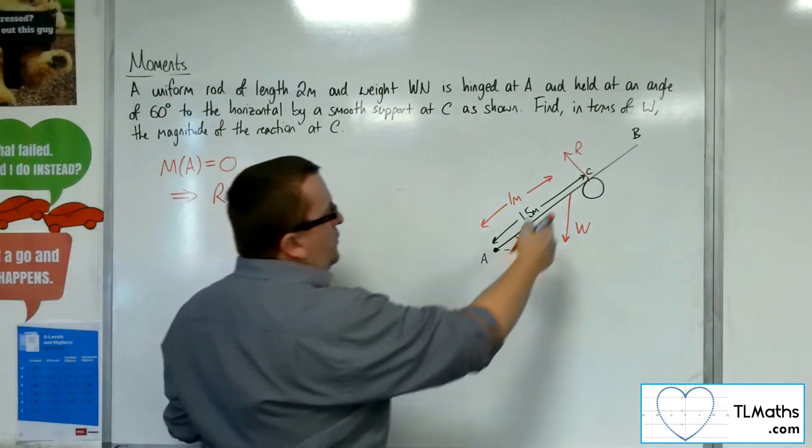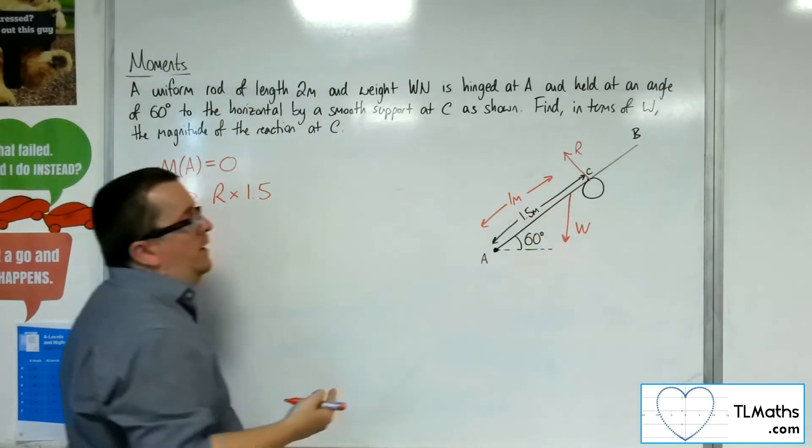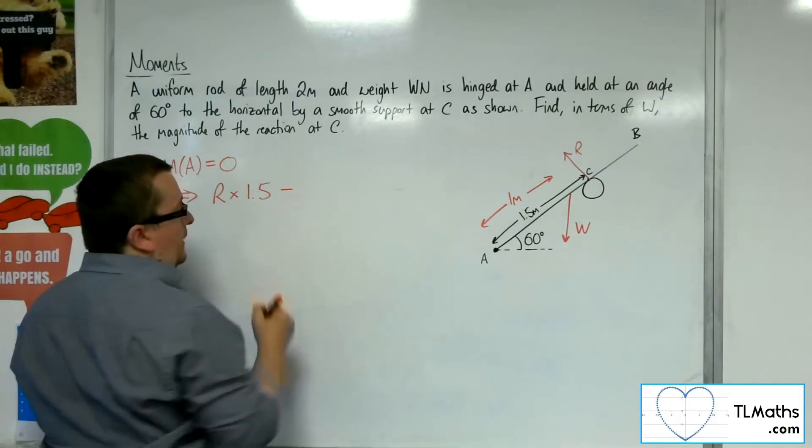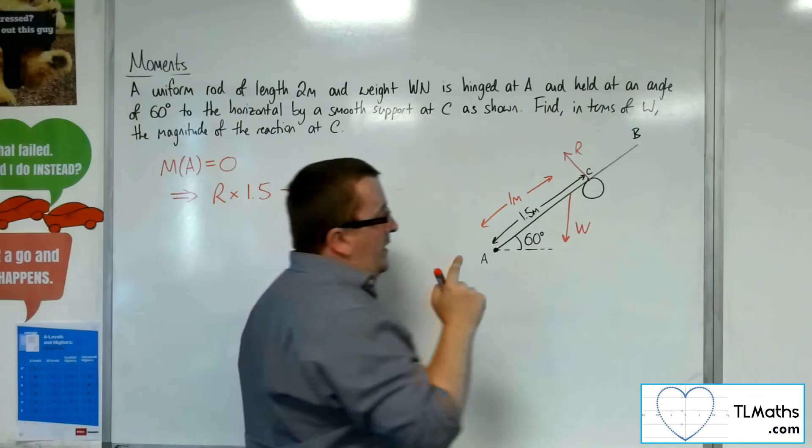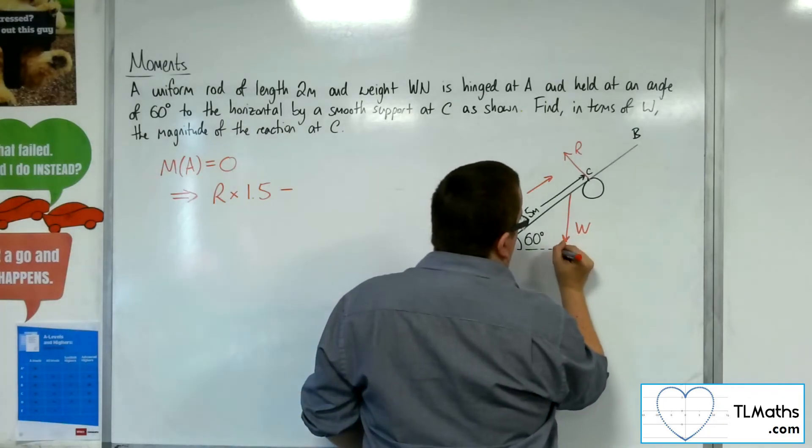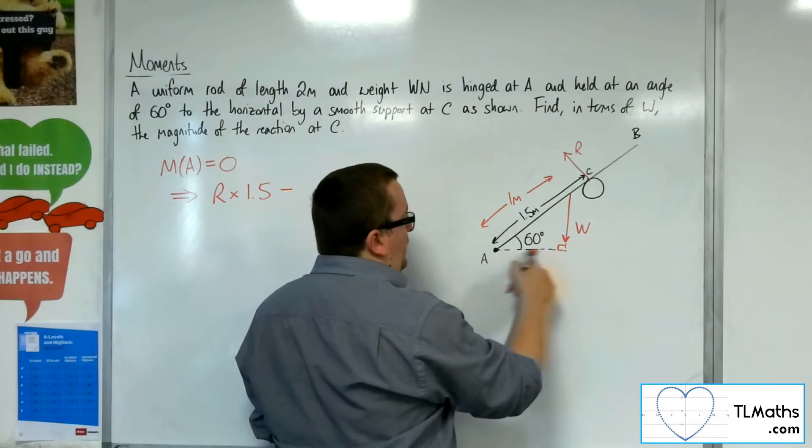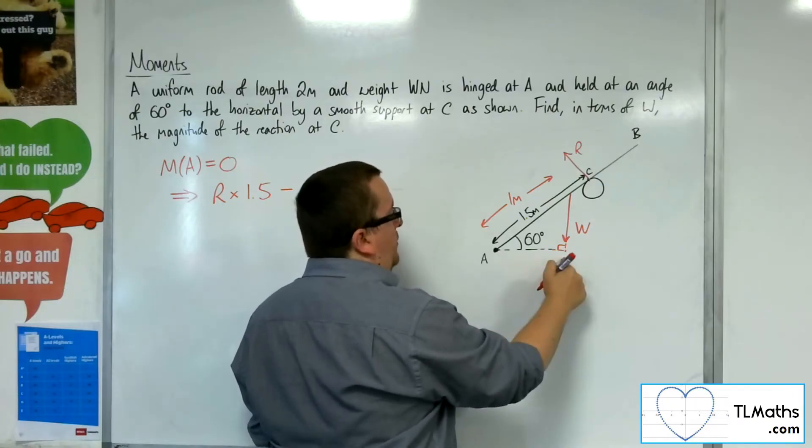And then I've got the W, which is going around in that direction, so that's clockwise, so negative. Now I need, if I project this down to make this right angle triangle, then I need this distance from point A to the force.